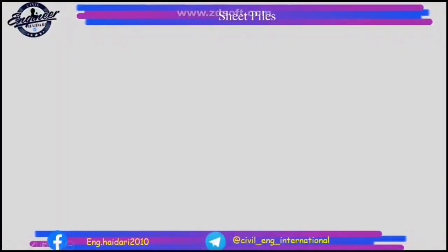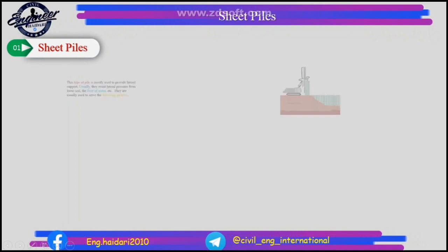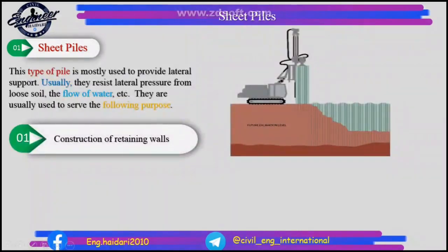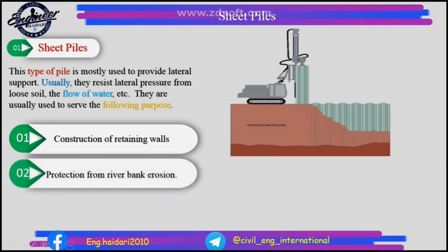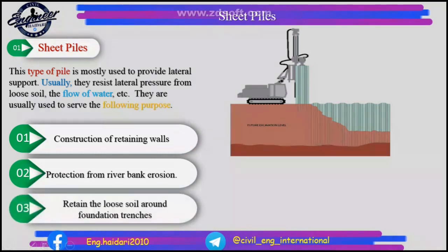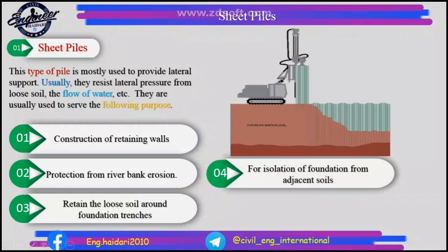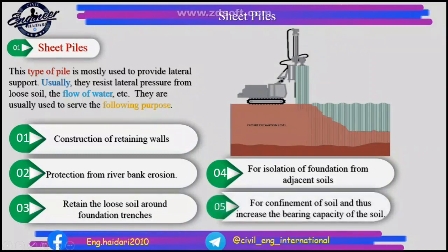Sheet piles: this type of pile is mostly used to provide lateral support, usually resisting lateral pressure from loose soil, water flow, etc. They are used for: 1. Construction of retaining walls, 2. Protection from river bank erosion, 3. Retaining loose soil around foundation trenches, 4. Isolation of foundation from adjacent soils, 5. Confinement of soil and thus increasing the bearing capacity of the soil.